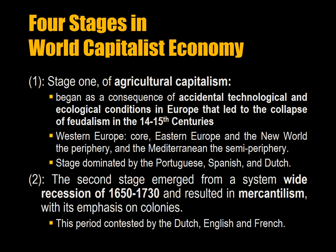The transformations occurred in all four stages of world capitalism. In stage one, agricultural capitalism began as a consequence of accidental technological and ecological conditions in Europe that led to the collapse of feudalism in the 14th and 15th centuries, in which Western Europe was the core, Eastern Europe and the New World were the periphery, and the Mediterranean were the semi-periphery, after having declined from being the core. After the final defeat of the Habsburgs in 1557, the system became nearly impossible to unbalance, and this stage was dominated by the Portuguese, the Spanish, and the Dutch.